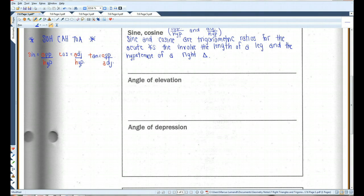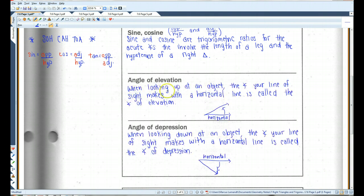Angle of elevation and angle of depression. When looking up at an object, the angle your line of sight makes with a horizontal line is called the angle of elevation. So if this is the horizontal line, and you're looking up this way, this is your angle of elevation. If you're looking down at an object, the angle your line of sight makes with a horizontal line is called the angle of depression.